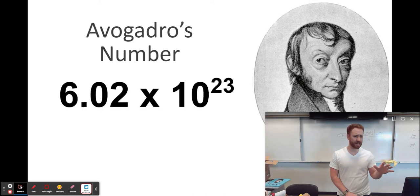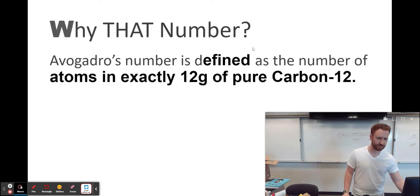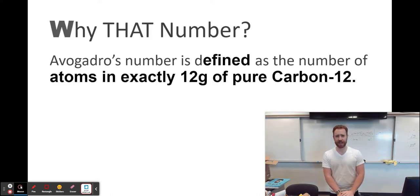Why that number? Seems kind of random. Why 6.02? Why not just 6.0? Why to the 23rd power? Seems like there must be some reason why it's this specific number. And if you're curious,